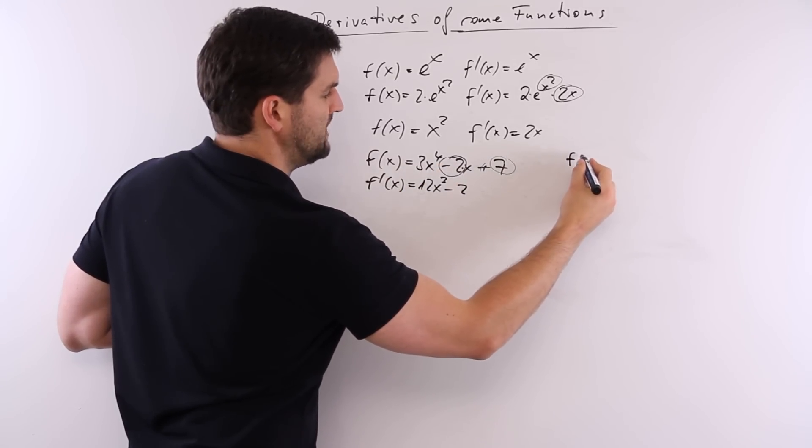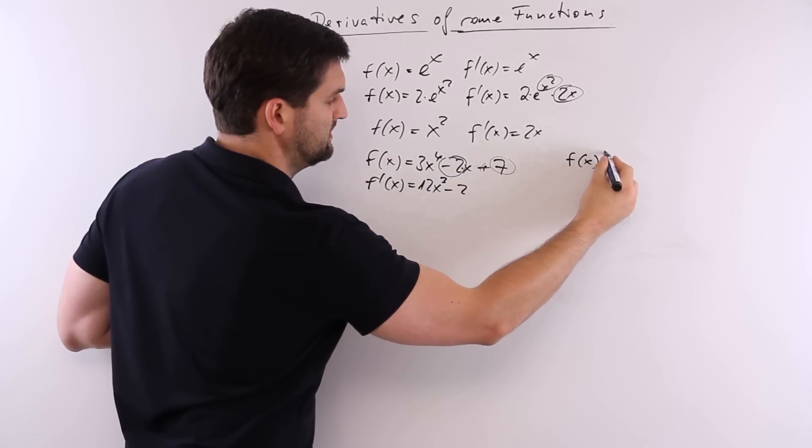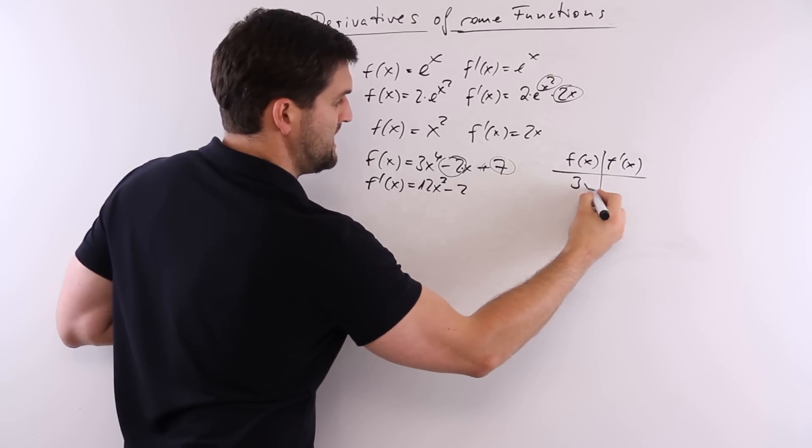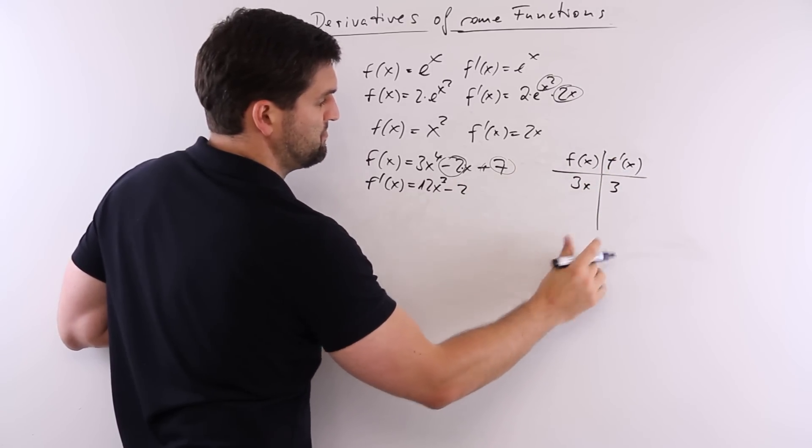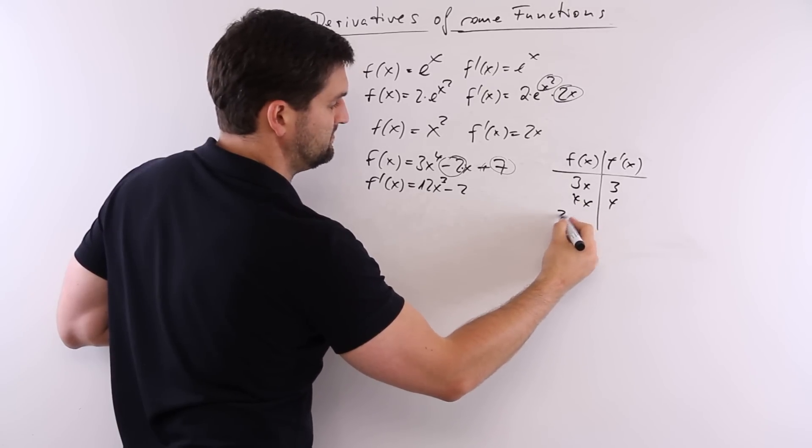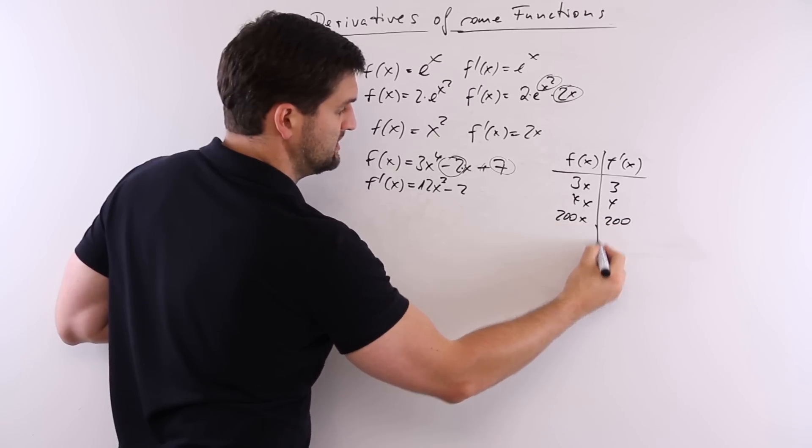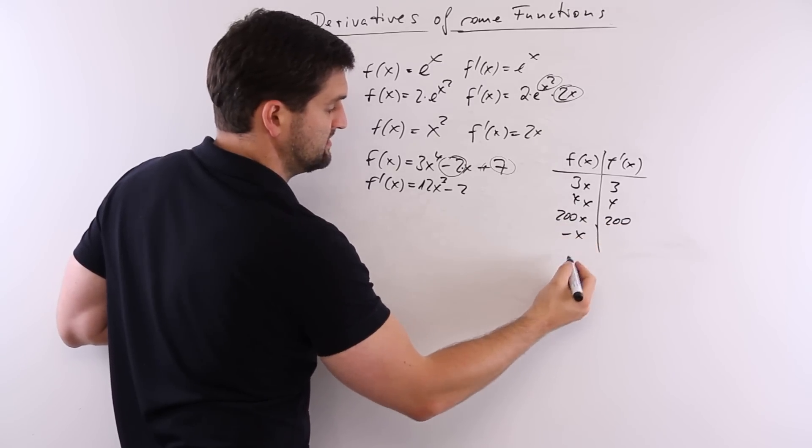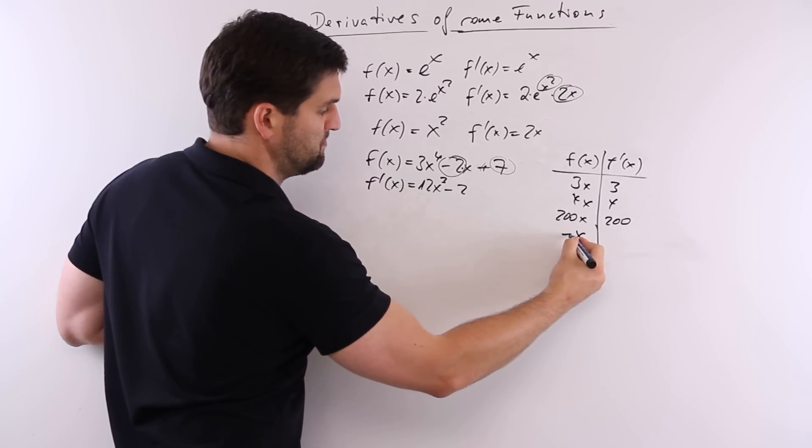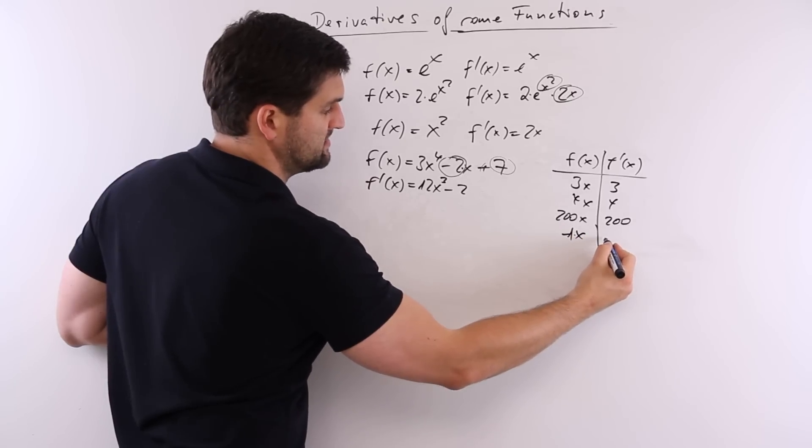For example, I tried to make it very simple. f(x), f prime x. If you have 3x, derivative would be 3. 4x would be 4. 200x, 200, minus x. Some are going crazy here. It would be minus 1 times x. So, minus 1.